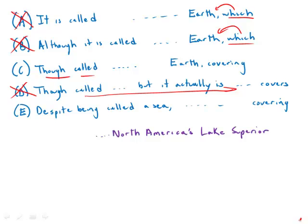So this is not right. And despite being called a sea, that's an incredibly awkward, irregular way to open the sentence. And also another problem with E is despite being called a sea, the largest lake on earth is actually the landlocked Caspian. It sounds like we're surprised that the largest sea and the largest lake is the Caspian. And so it's a very strange construction. E is not correct.